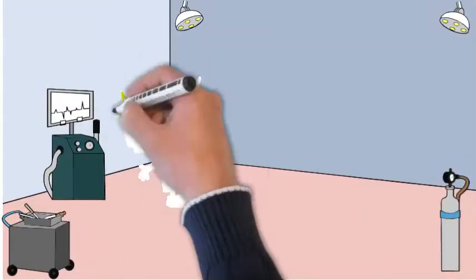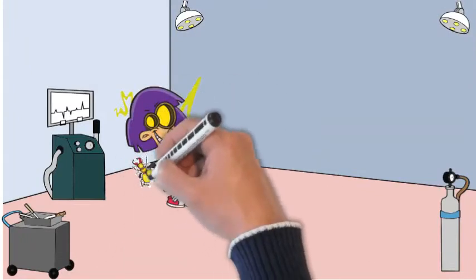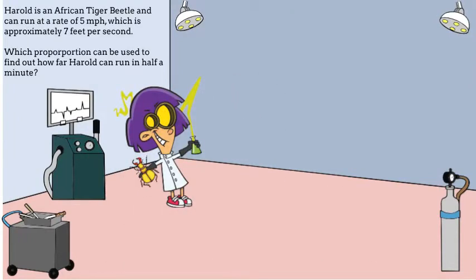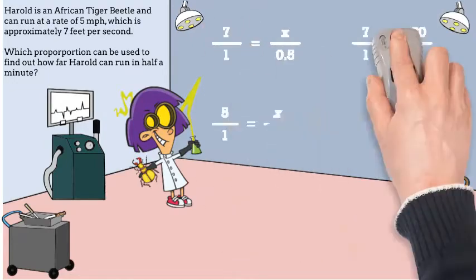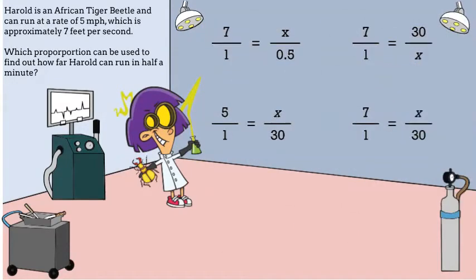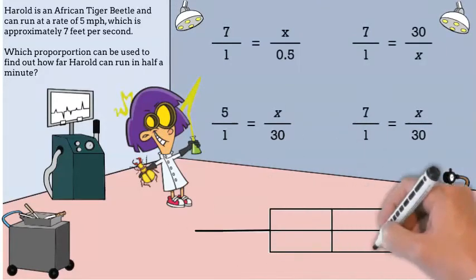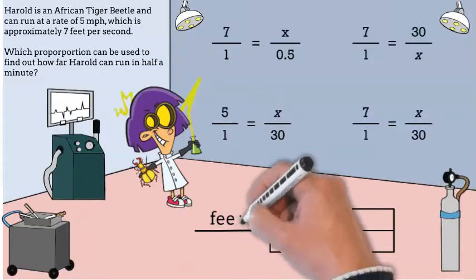Harold, let's use your speed data to show how to represent proportional relationships with proportions and graphs. Harold is an African tiger beetle and can run at a rate of five miles per hour, which is approximately seven feet per second. Which proportion can be used to find out how far Harold can run in half a minute? First, we'll use a graphic organizer and set up our own proportion. Our labels will be feet per second. He runs seven feet in one second.